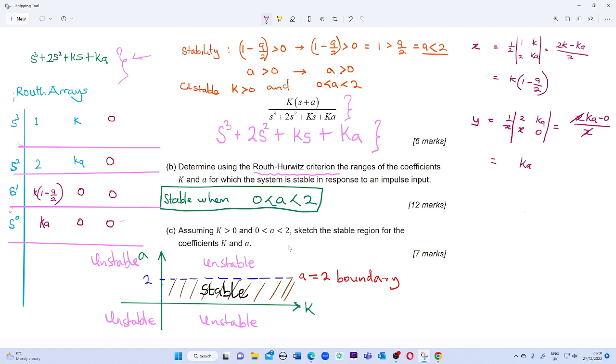How do we plug it into the Routh array? First of all, to put it in the Routh array, we single out all the polynomial coefficients.